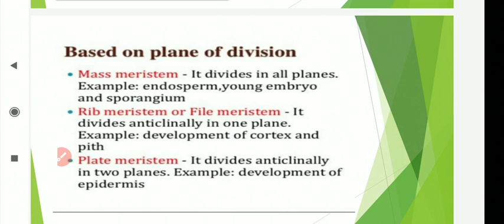Rib meristem, also called file meristem, is the second type. In this case, meristem cells divide anticlinally or in one plane, thus producing rows of cells in a column. It is also termed file meristem. The length of the organ increases due to such meristem, so rib meristem is responsible for increasing the length of a plant organ and plays a very important role in pith formation.